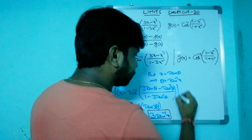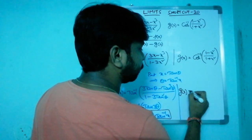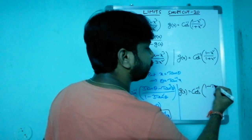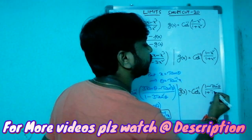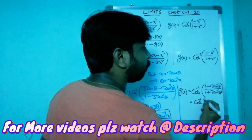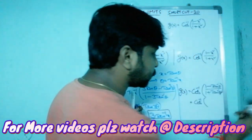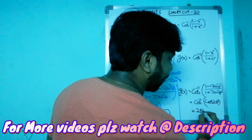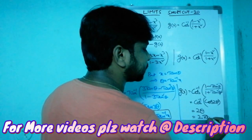For g(x), with x = tanθ: g(x) = cos⁻¹[(1 - tan²θ) / (1 + tan²θ)] = cos⁻¹[cos2θ] = 2θ = 2·tan⁻¹x.